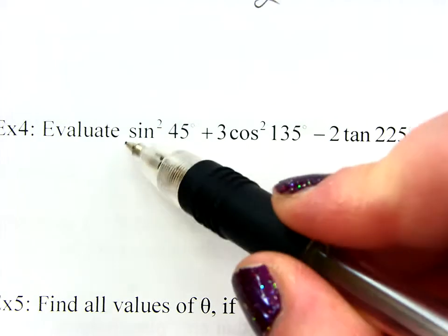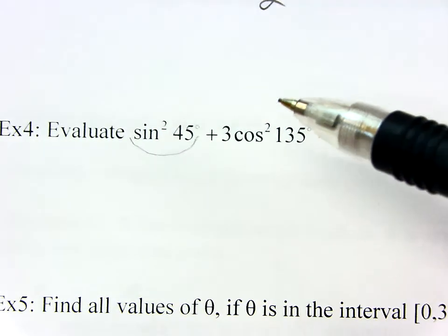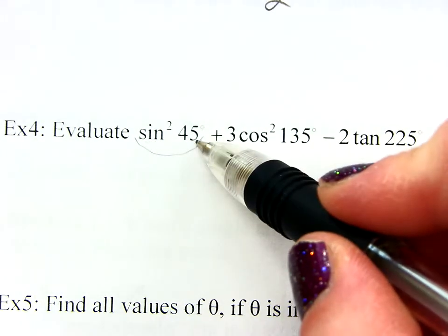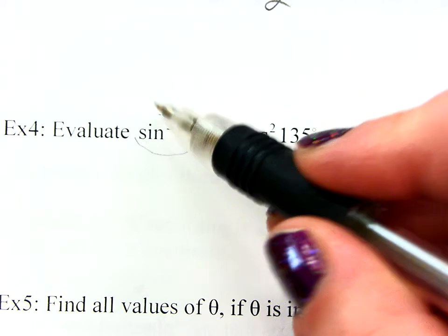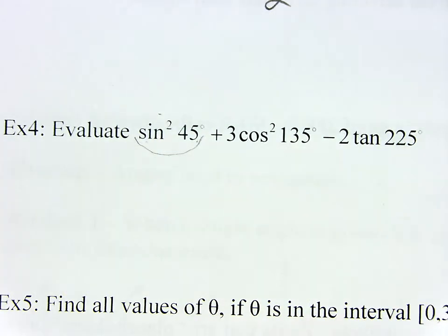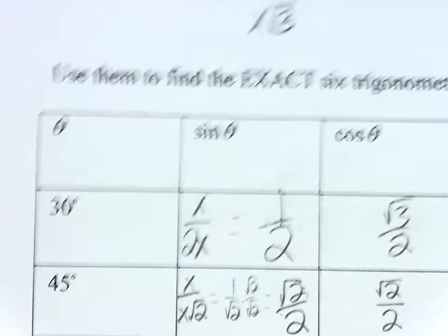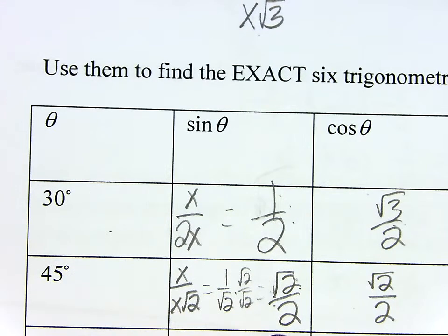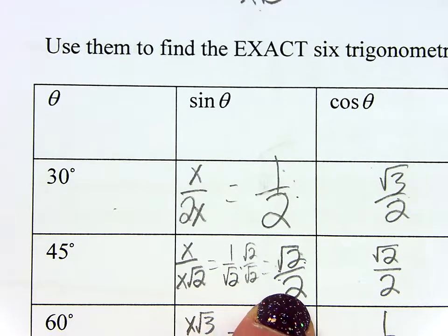Remember, when it's written like this, it's the same thing as the sine of 45 squared. Sine of 45 squared. Hold on, I already know that. If I look at my chart, I know the sine of 45. Wasn't it root 2 over 2? Yeah.